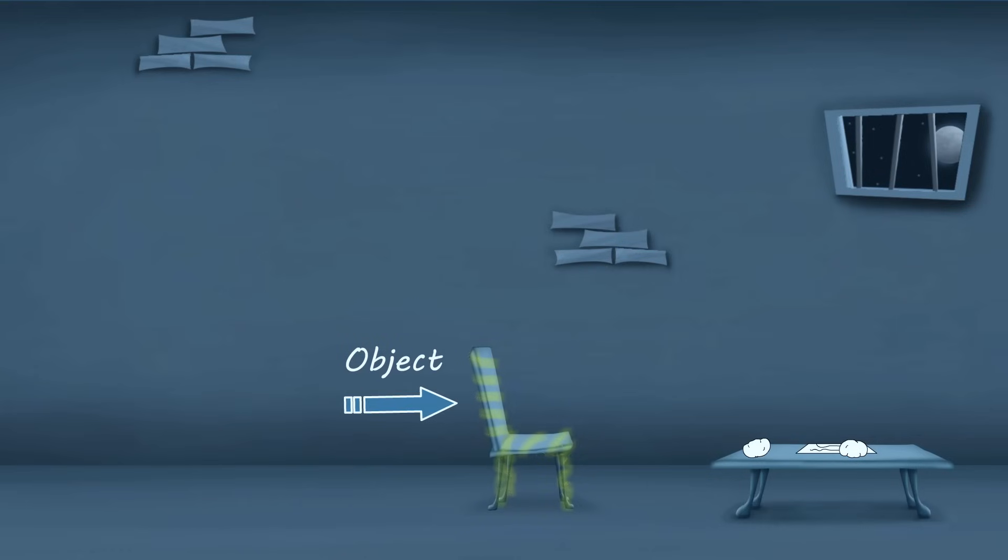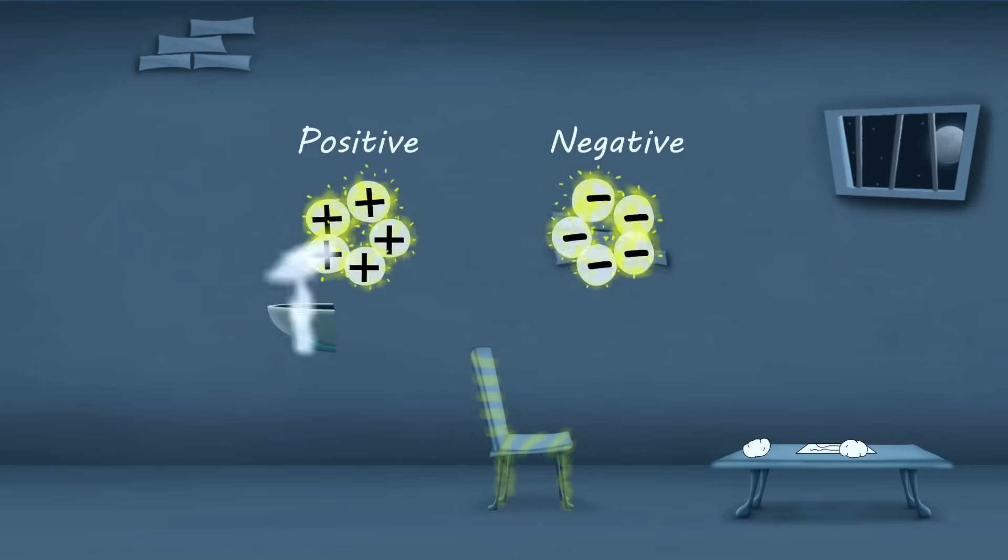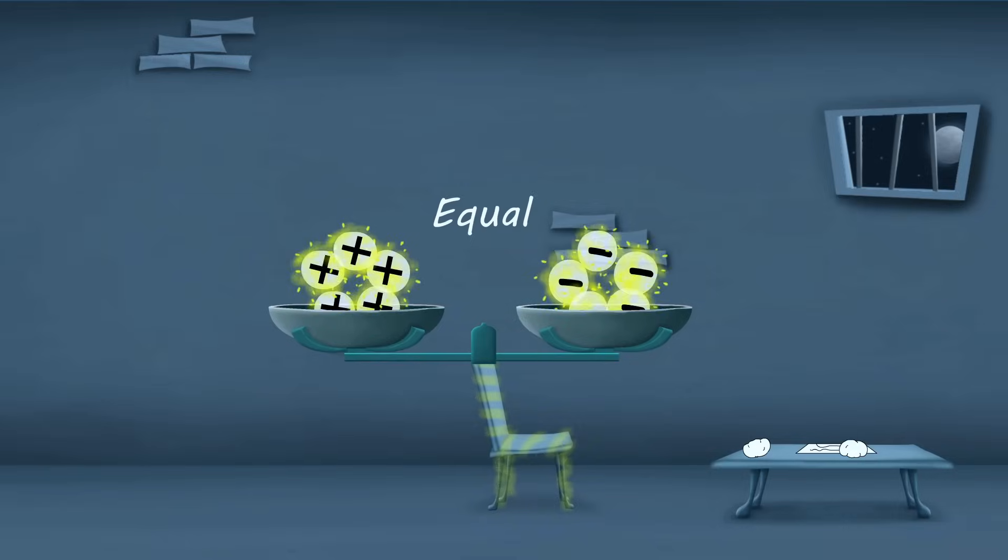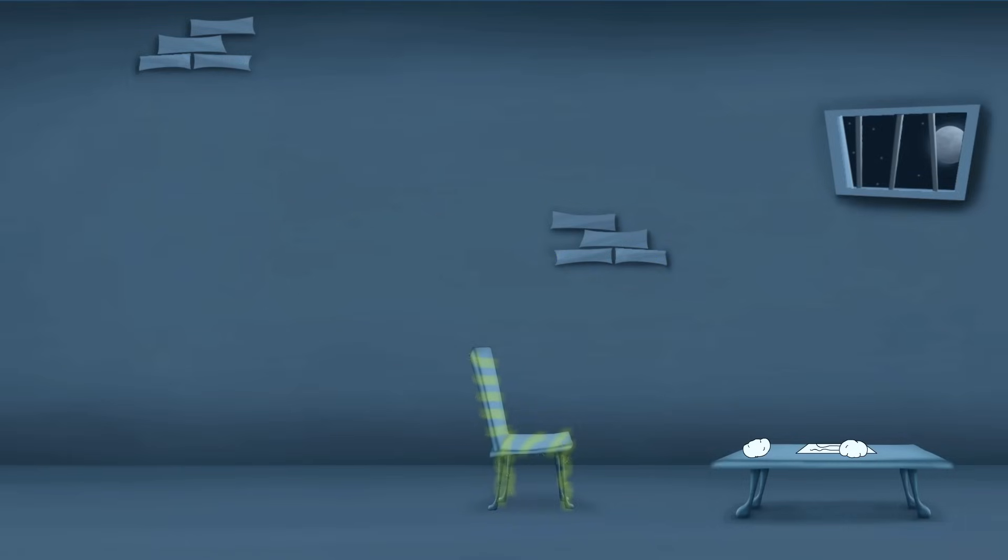However, there are some objects where the positive and negative charges are equal to one another. In such cases, we say that the object is electrically neutral.